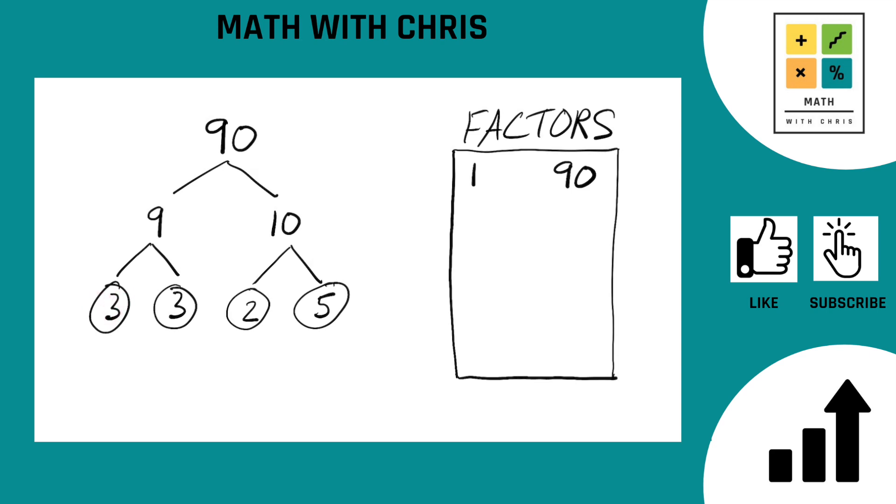The prime factors are 3, another 3, a 2, and a 5. If we go ahead and put those in order, we get 2 times 3 times 3 times 5. And if you multiply those together, that does in fact give you 90 as it should.